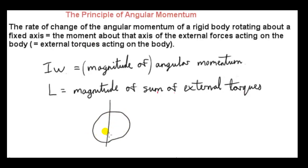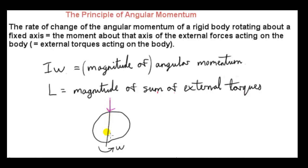Let's try to understand this principle by considering the torques acting on the body. Here we have a rigid body constrained to only rotate about this axis — it cannot rotate about any other axis. It may already be rotating with angular speed omega, or it may be stationary, waiting for an external torque to act on it. An external torque involves an external force on the body. We are not going to talk about internal forces — those are the forces between particles that make up the body, like molecular or electrical forces. This is a rigid body, so internal forces don't come into this picture.